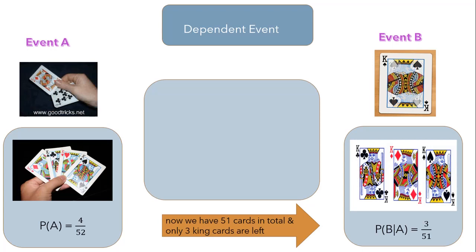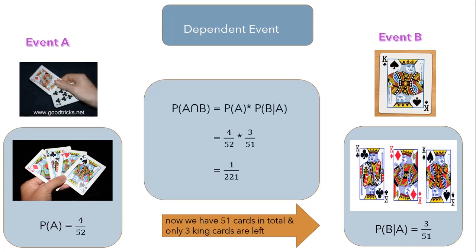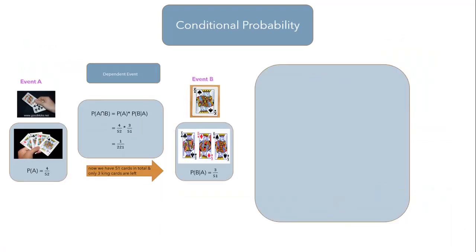Now suppose I want to find the probability for both the occurrence of event A and event B — that is P(A and B) = (4/52) × (3/51), which equals 1 over 221. For finding dependencies of events, we can calculate conditional probability. We have a formula: probability of B given A means for finding the probability of event B, we already know the probability of event A. So P(B|A) = P(A and B) over P(A).